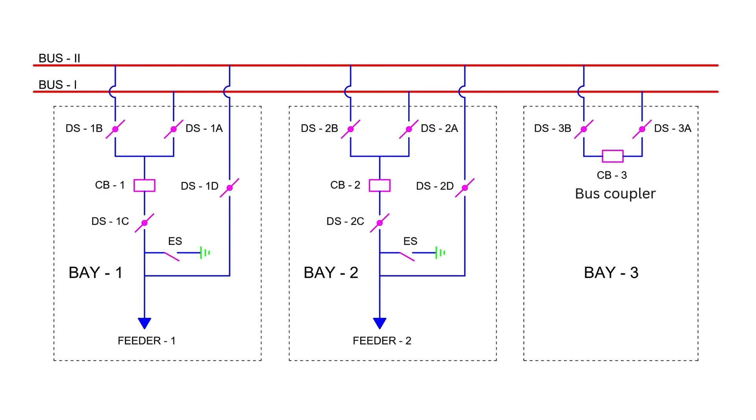In this scheme, two buses, bus 1 and bus 2, are used to supply feeders. Typically, bus 1 serves as the main bus, while bus 2 acts as both a main and transfer bus. This dual purpose of bus 2 gives the scheme its alternative name, main come transfer bus scheme.